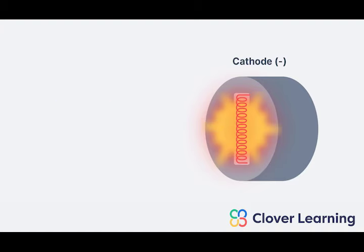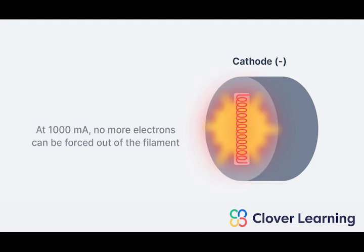There is a limit to the number of free electrons that can be created at the cathode. As we increase the mA, more and more electrons are created at the filament. But there is a limit. At about 1000 mA, the space charge becomes so high that no more electrons can be forced out of the filament. This limitation has a name. It's called the space charge effect.